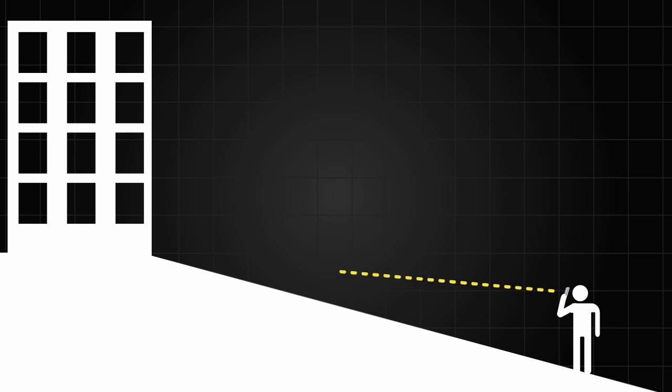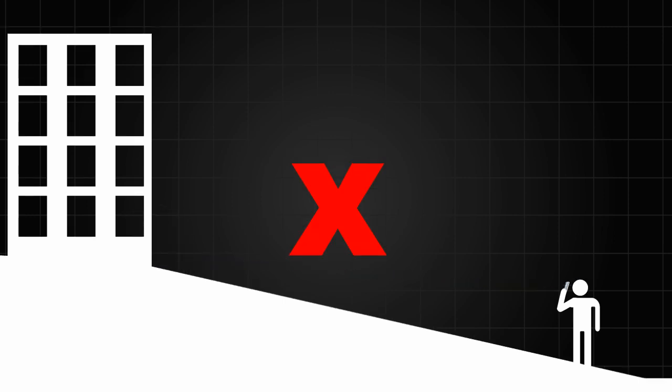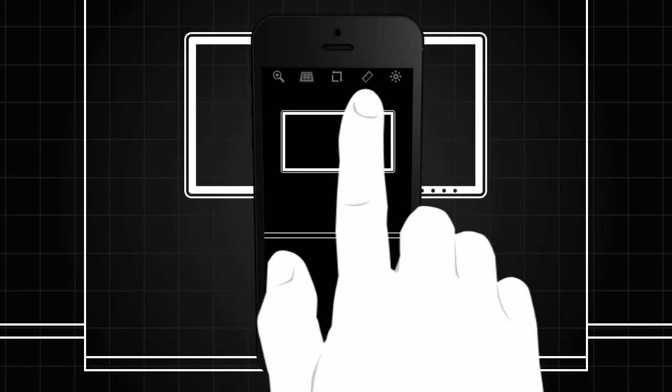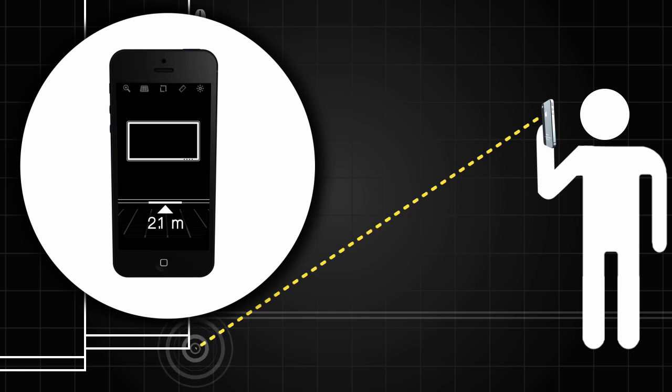If you want to know how far you're standing from something, it's important that you choose an object that's at your same level of elevation. Once you've found an object, tap Measure.